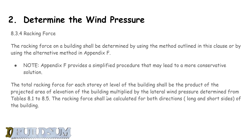The total racking force for each storey or level of the building shall be the product of the projected area of elevation of the building multiplied by the lateral wind pressure determined from tables 8.1 to 8.5. The total racking force shall be calculated in both directions — long and short sides of the building — so that's why we do two wind directions, one on the long side and one on the short side.